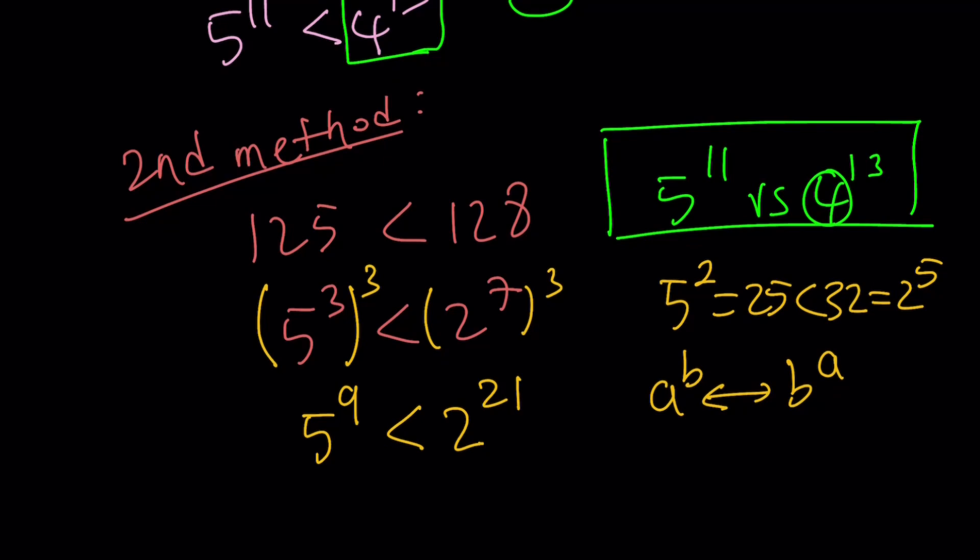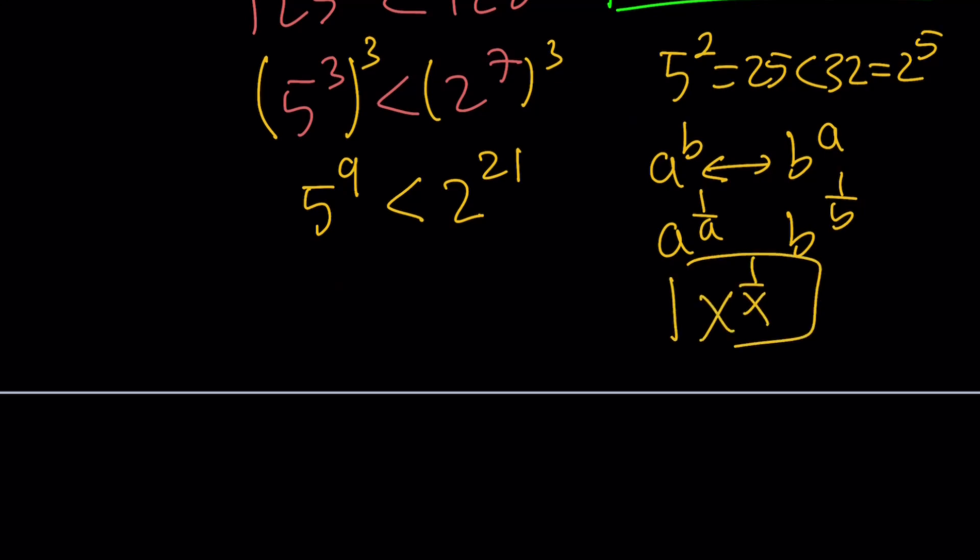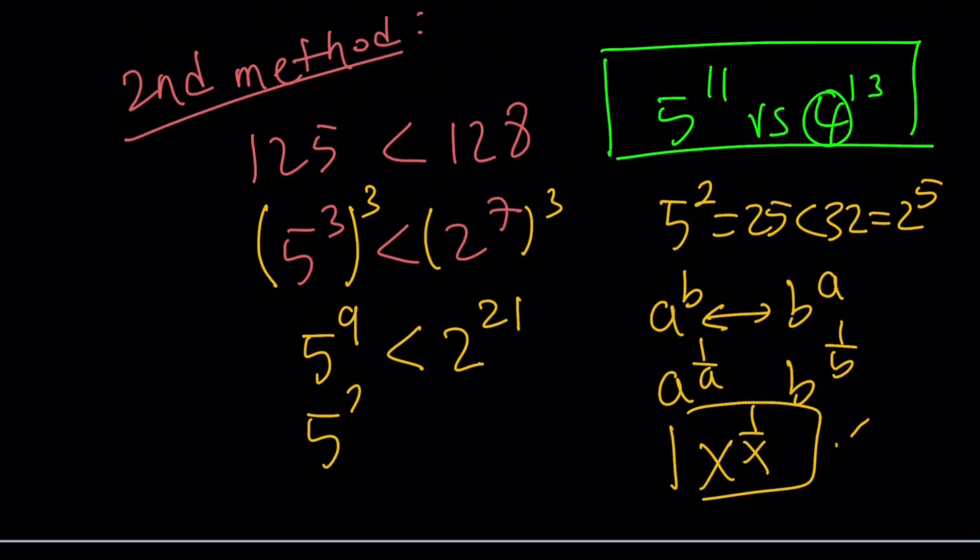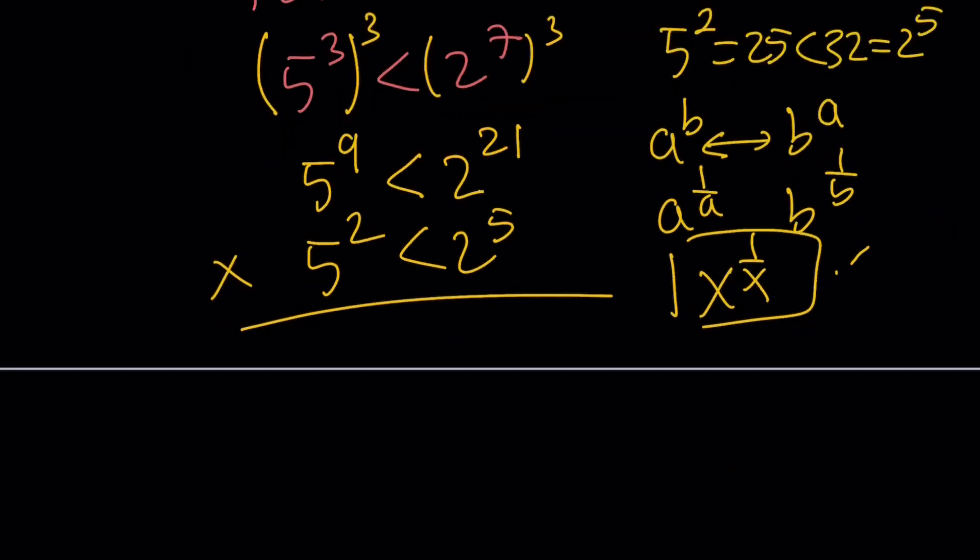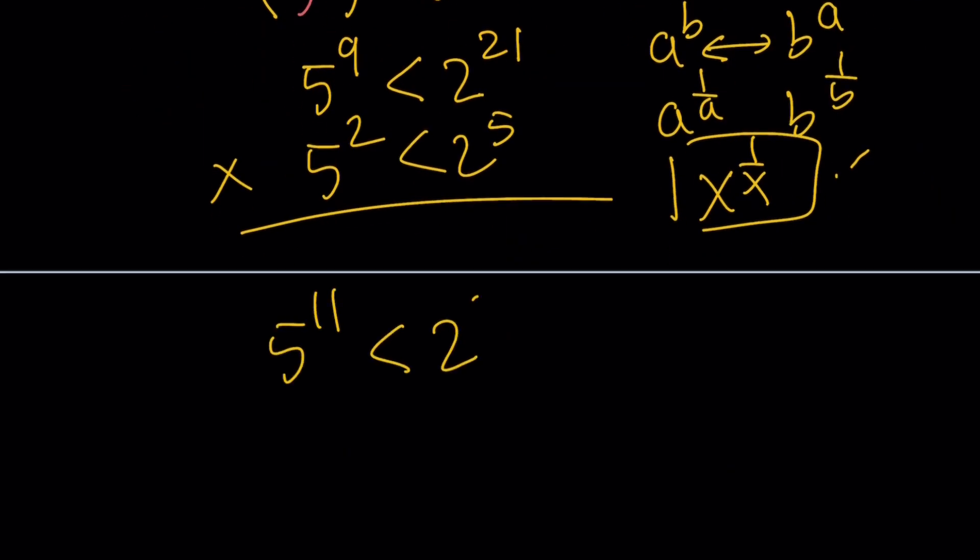There's a bunch of problems like a to the b and b to the a. You raise both sides to the power 1 over a b and look at the graph of x to the power 1 over x. But here's what I'm going to do: 5 squared is less than 2 to the 5th. Multiply these together: 5 to the power 11 is less than 2 to the power 26 which equals 4 to the power 13. Again, the larger number is 4 to the power 13.